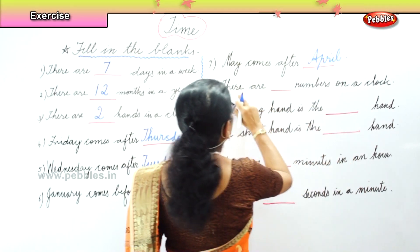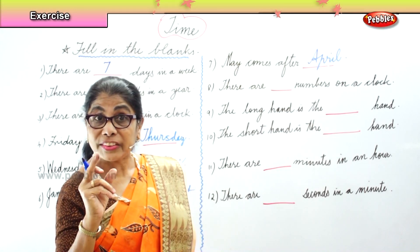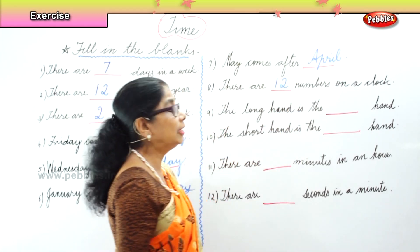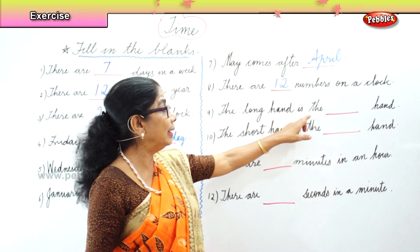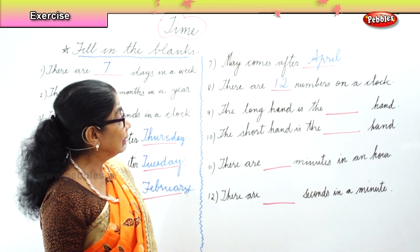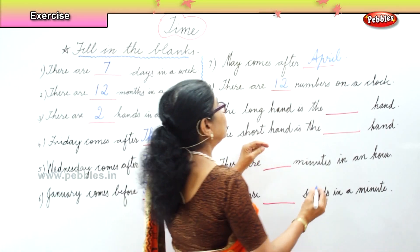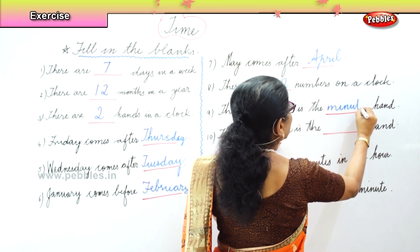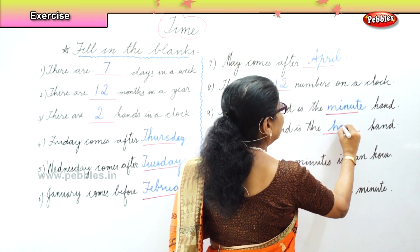Now, there are dash numbers on the clock — how many numbers on the face of the clock? Twelve — how many numbers are there? Good, twelve numbers on the face of the clock. The long hand is the minute hand. The short hand is the hour hand. So the long hand is the minute hand, and the short hand is the hour hand.